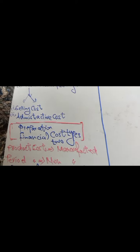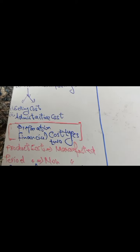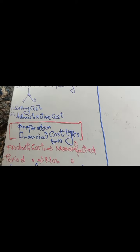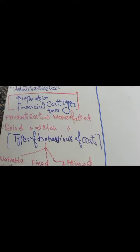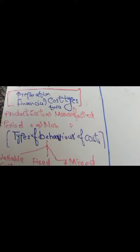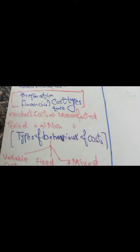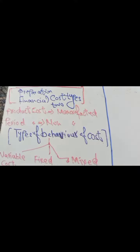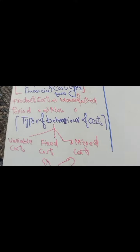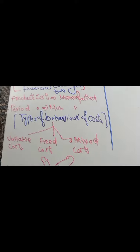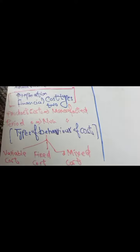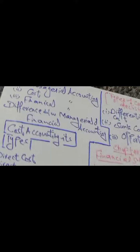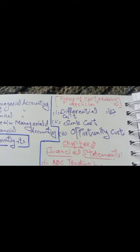Financial cost: two types — product cost, which includes manufacturing cost, and period cost, which includes non-manufacturing cost. Types of behavior cost: variable cost, fixed cost, mixed cost, and other types of cost.